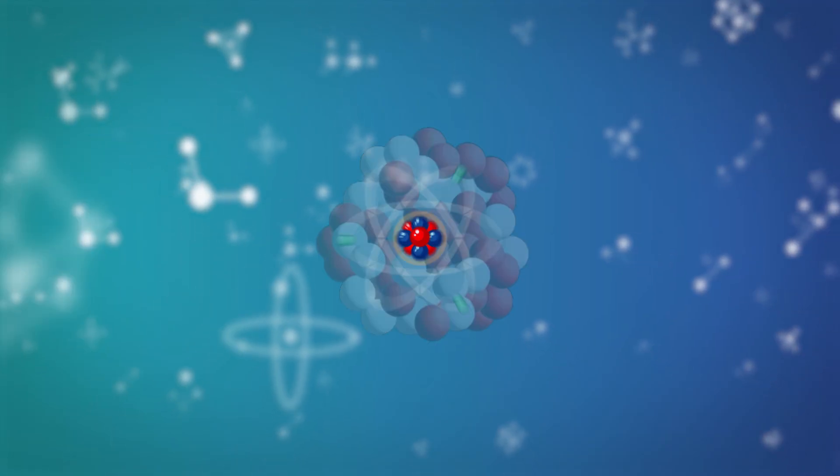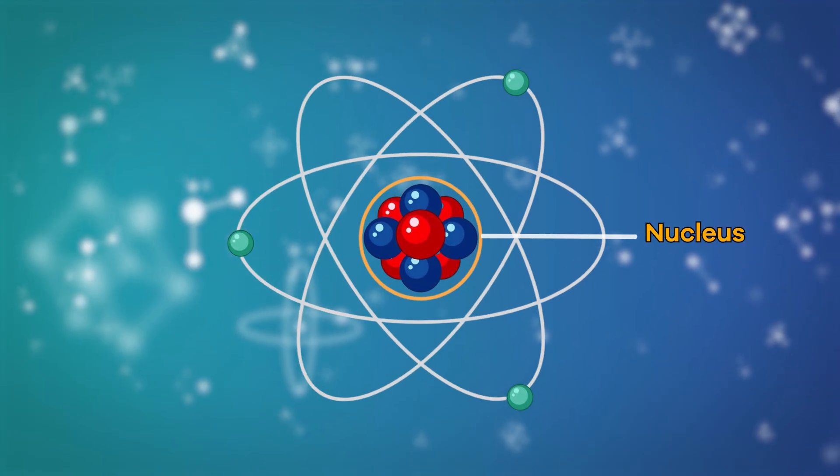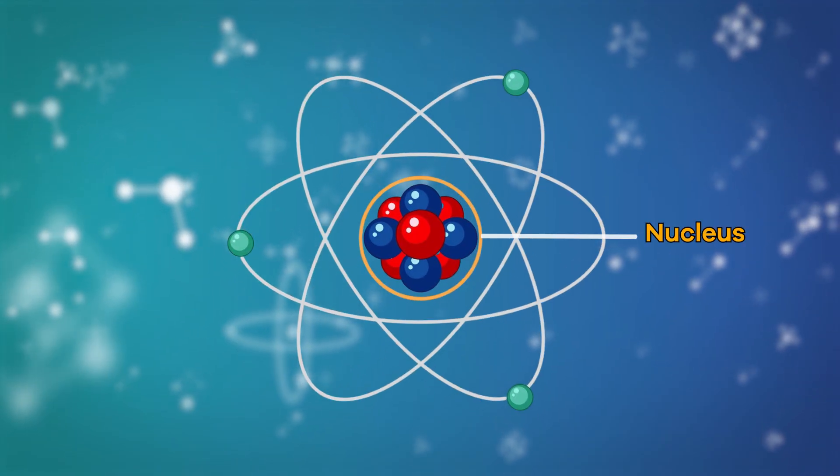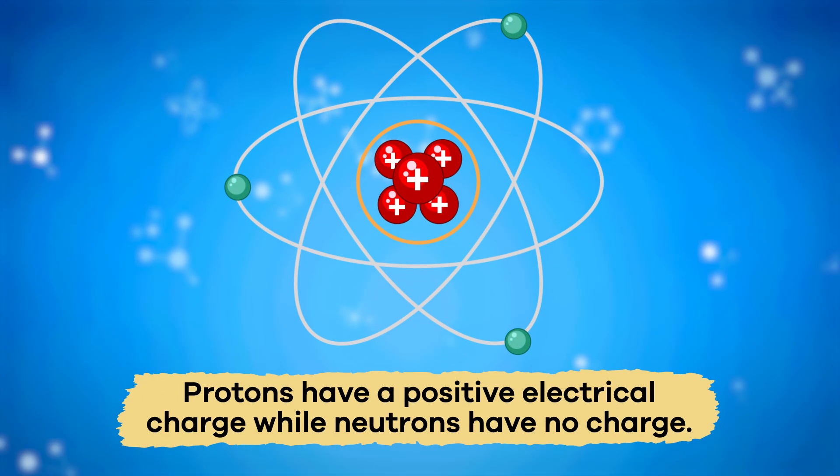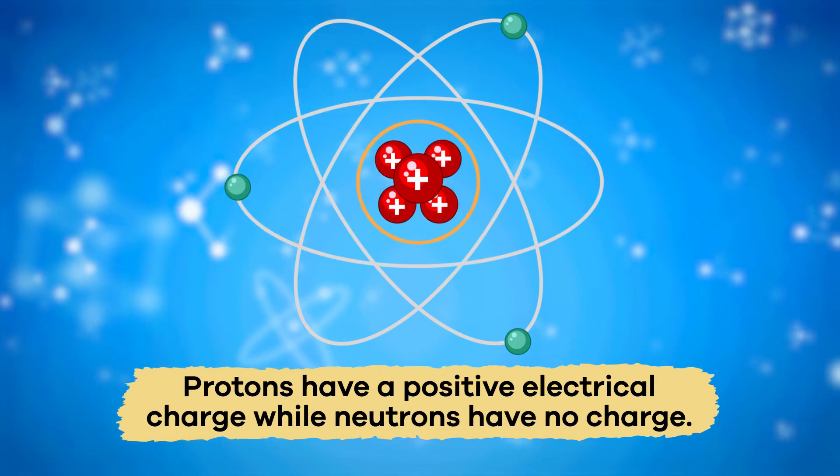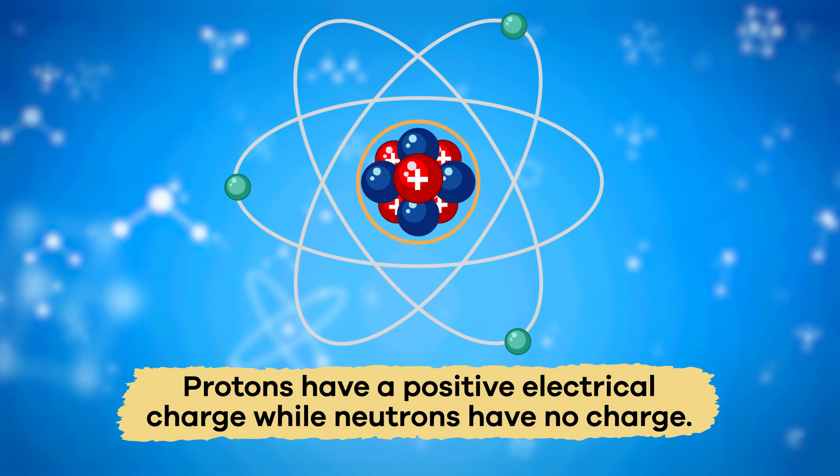Protons and neutrons form an atom's nucleus, which is located in the center of the atom. Protons have a positive electrical charge, while neutrons have no charge.